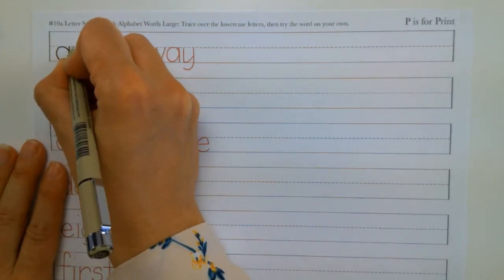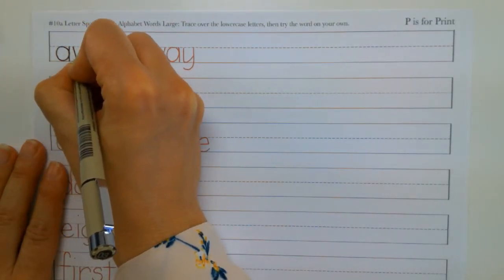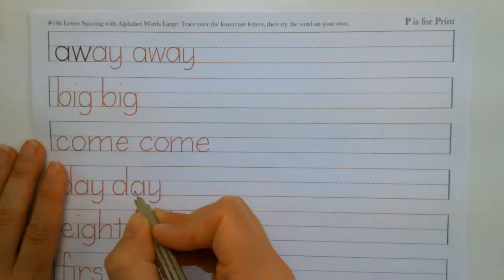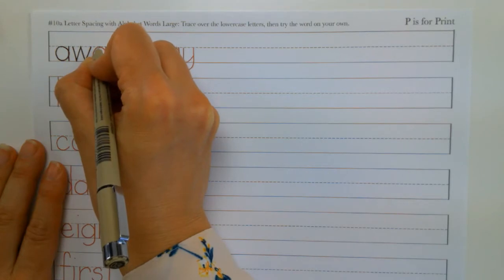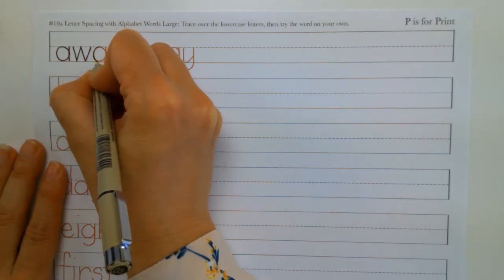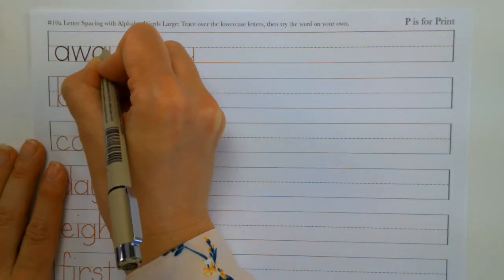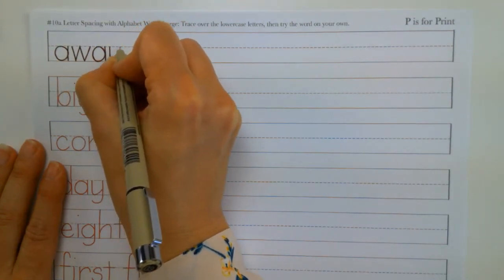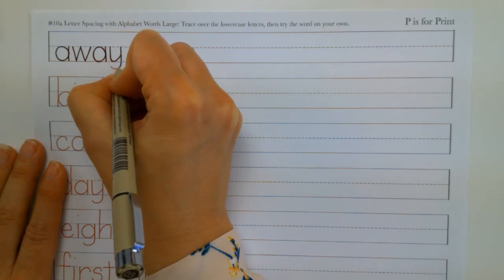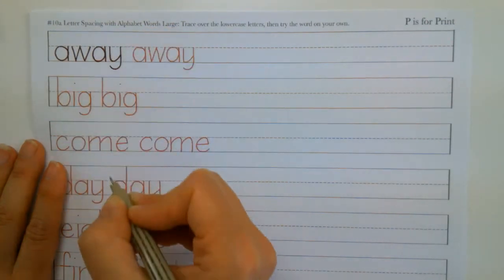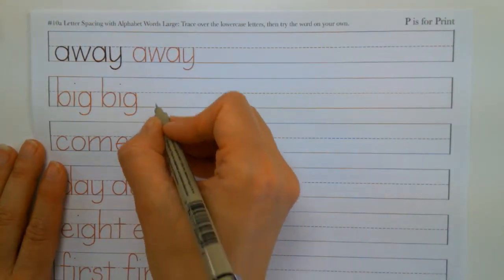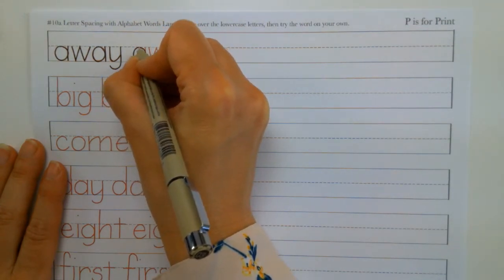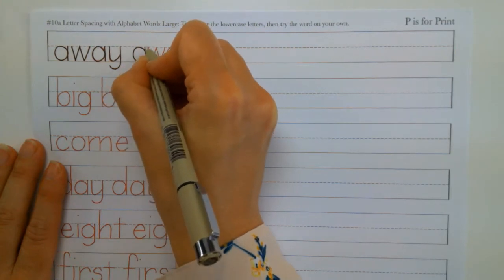So first we have a circle. And then we have our horizontal, our vertical line coming down. We have our W staying with that dashed line and the bottom line. And same thing for our A. So trace over mine.